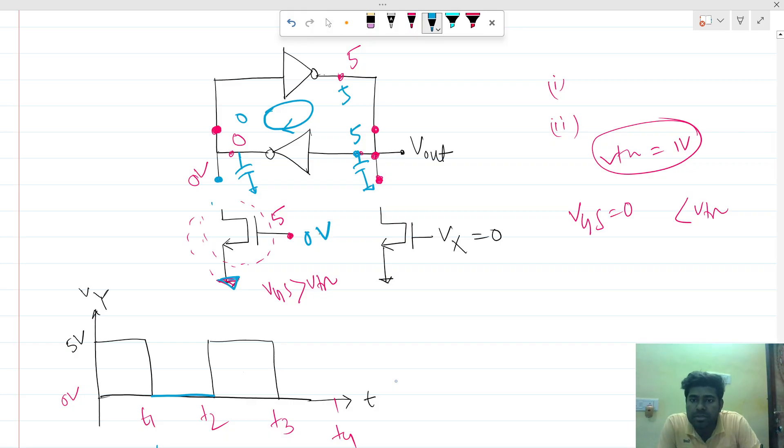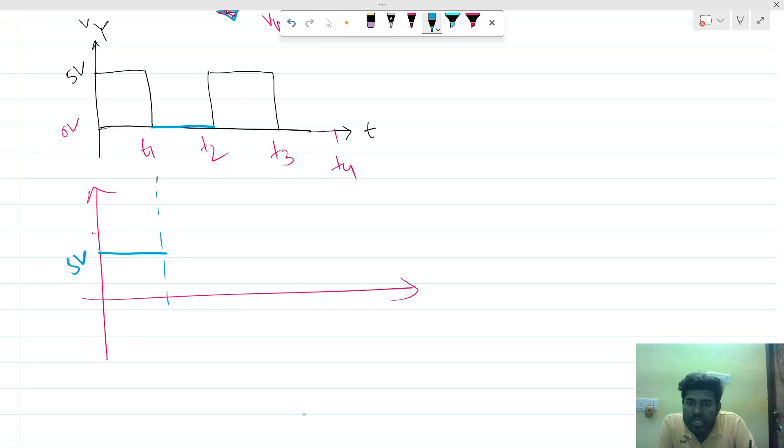There will be no conduction of this MOSFET, but the current will flow in this branch, and the latch will hold this previous voltage. So at t1 to t2, it will be again 5 volts.